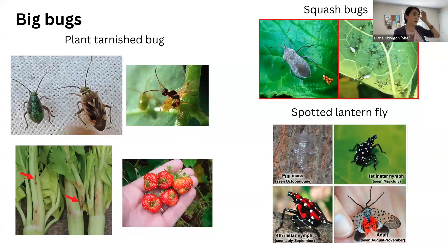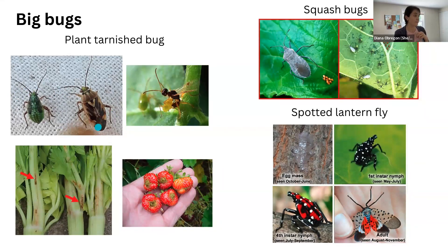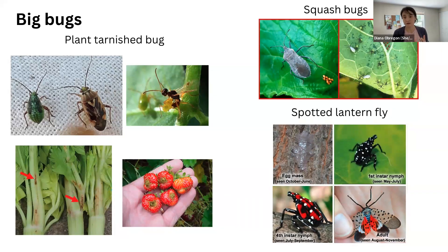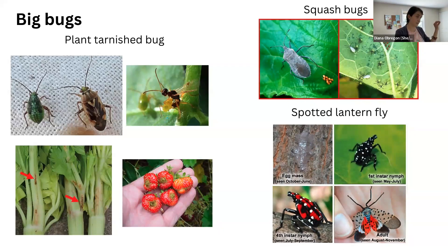Moving on to larger bugs — we have the tarnished plant bug. You can see the nymph and the adult here. This is an invasive species that attacks many plants but is particularly keen on fruits. You can see the damage here on strawberries. They also like clover and alfalfa, so if you want to grow strawberries, try to remove any clover or alfalfa you might have around. There are some parasitoids, and when this insect was detected here, a parasitoid was introduced for some biological control, but not enough — so you should be aware of it.